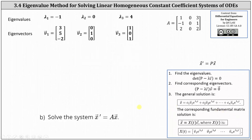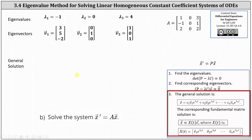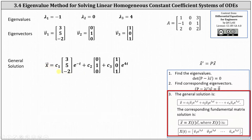Because we have three distinct real eigenvalues and three corresponding eigenvectors, we can write the general solution to x prime equals A times x. The general solution is x equals c one times the eigenvector three, five, negative two times e to the power of negative t — since lambda sub one is negative one — plus c two times the eigenvector zero, one, zero (the e to the zero equals one, so we drop it), plus c three times eigenvector one, zero, one times e to the power of four t, since lambda sub three equals four.